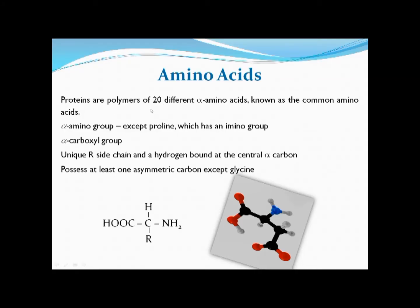Amino acids are the building blocks of proteins. An amino acid compound has one central carbon with four different groups attached: an amino group, a carboxylic acid group, a hydrogen, and an R group — where R means any side chain. Normally, there are 20 different amino acids that make up proteins.